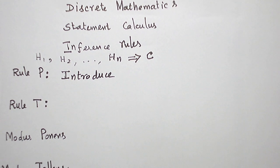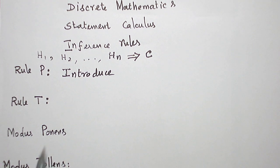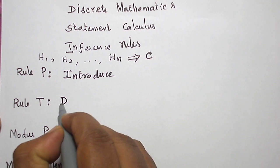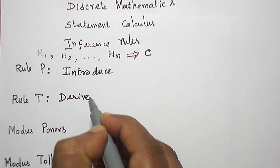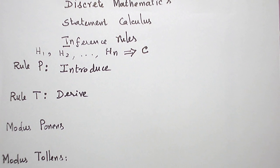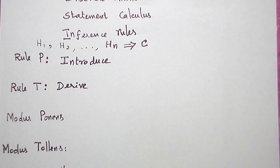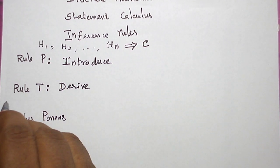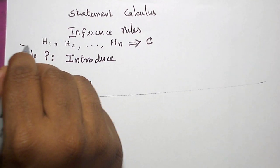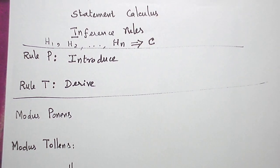And using rule T, we are going to derive any conclusion, derive any statement formulas by applying those premises in standard implications and equivalences. So what are the standard implications we are going to use?